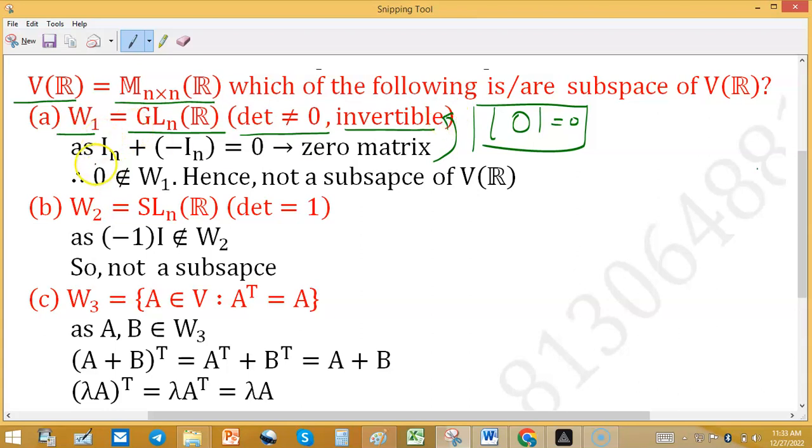Similarly, if you consider two elements I_n or negative I_n, then their sum also does not go to this set, so two properties are going to fail, so W1 is not a subspace.